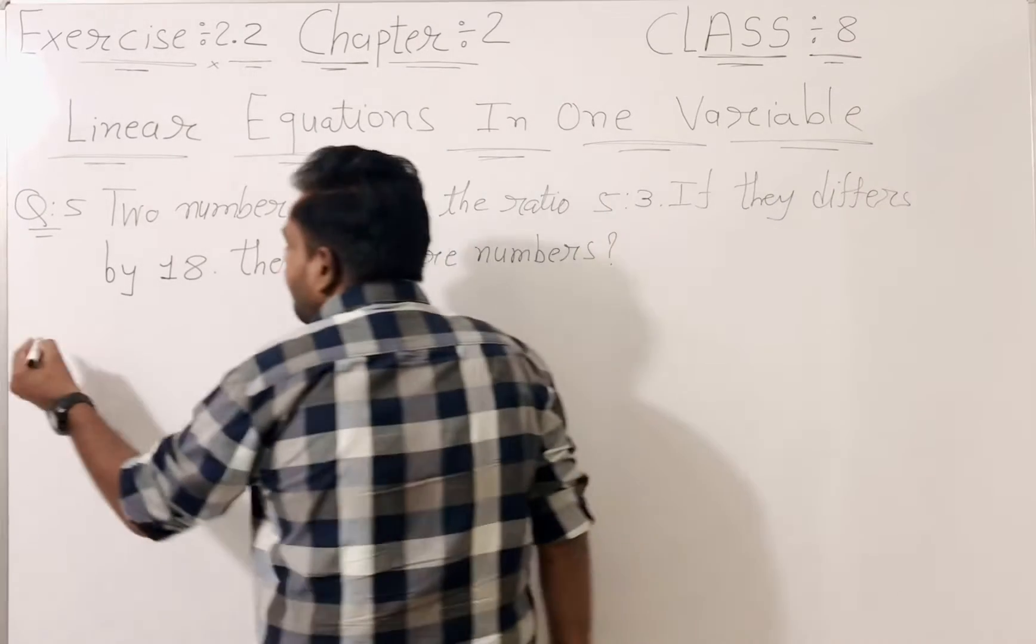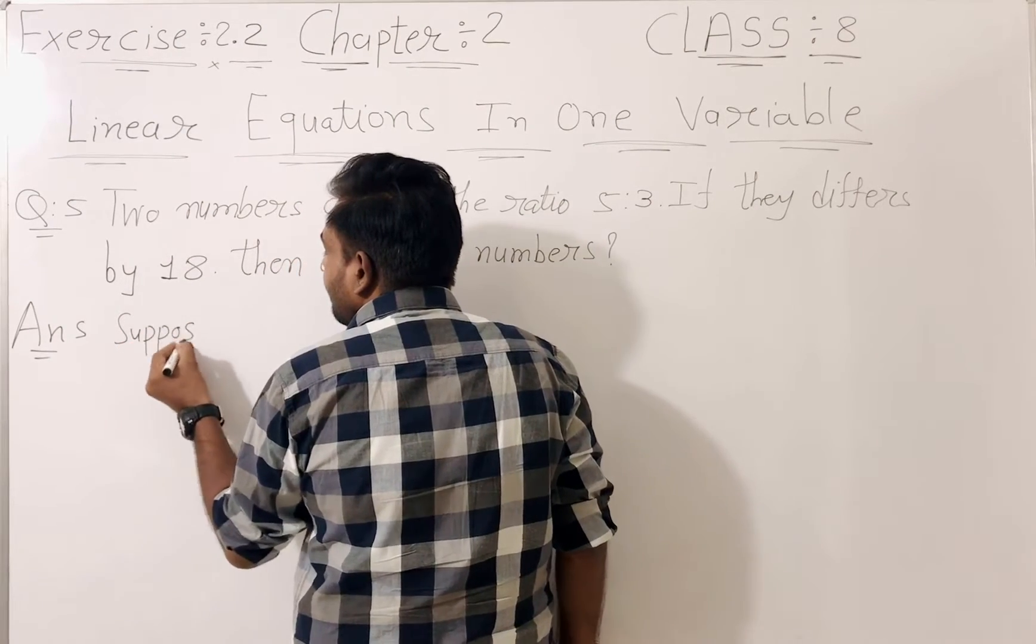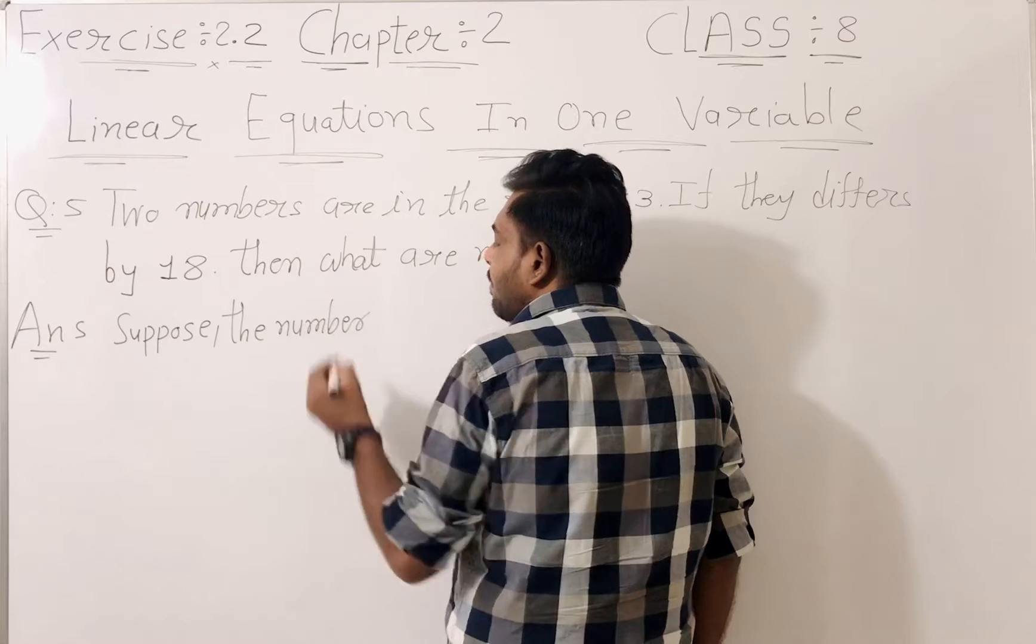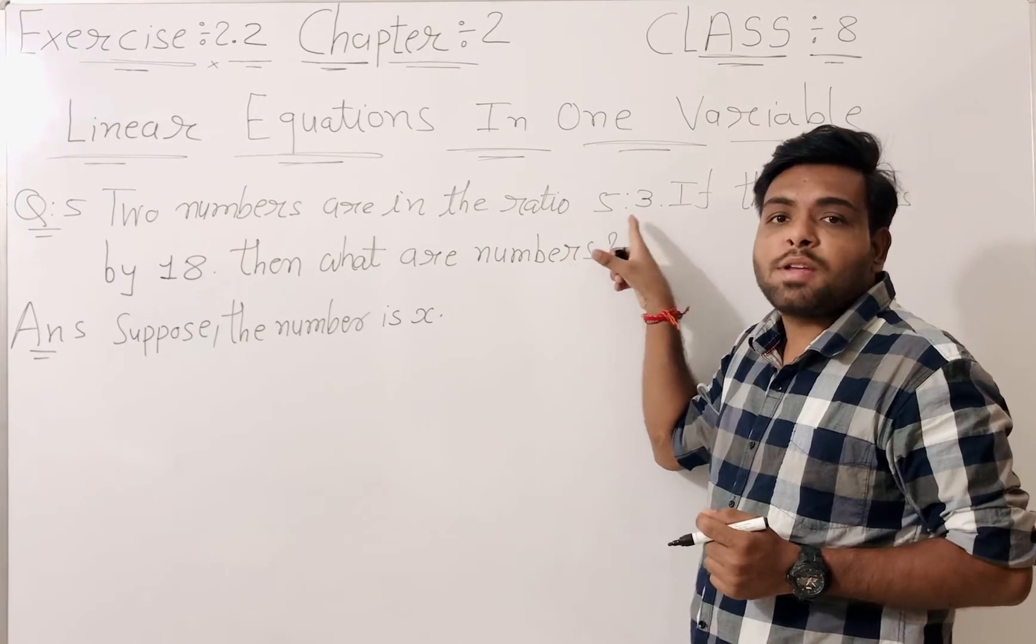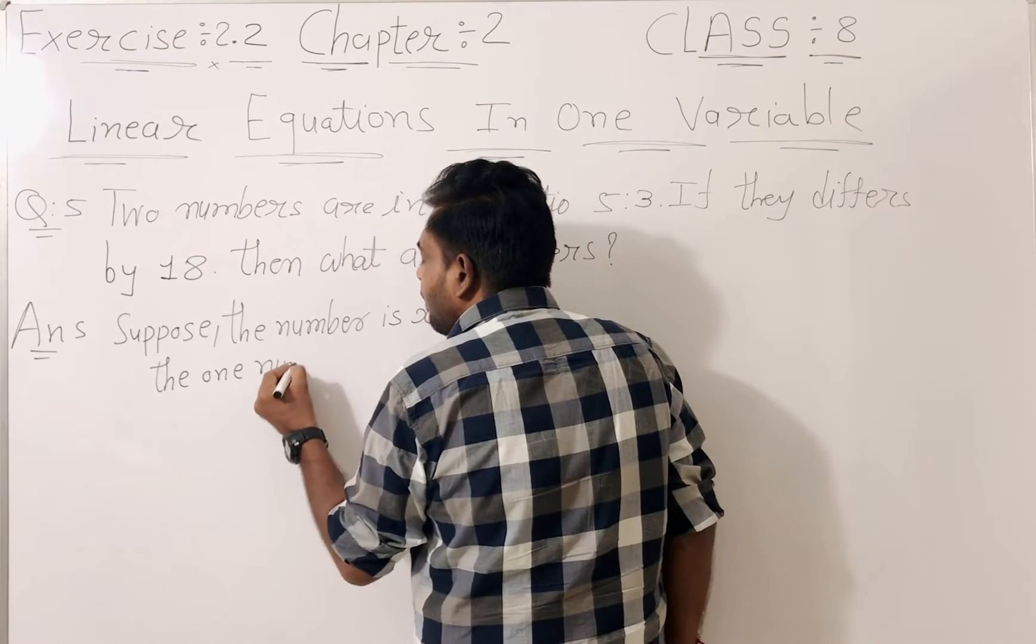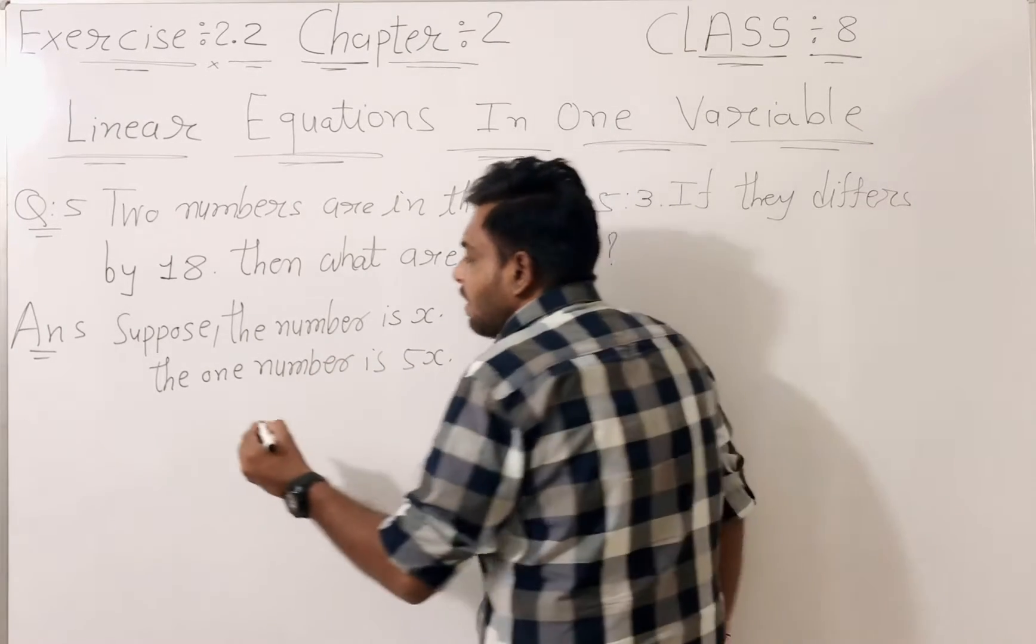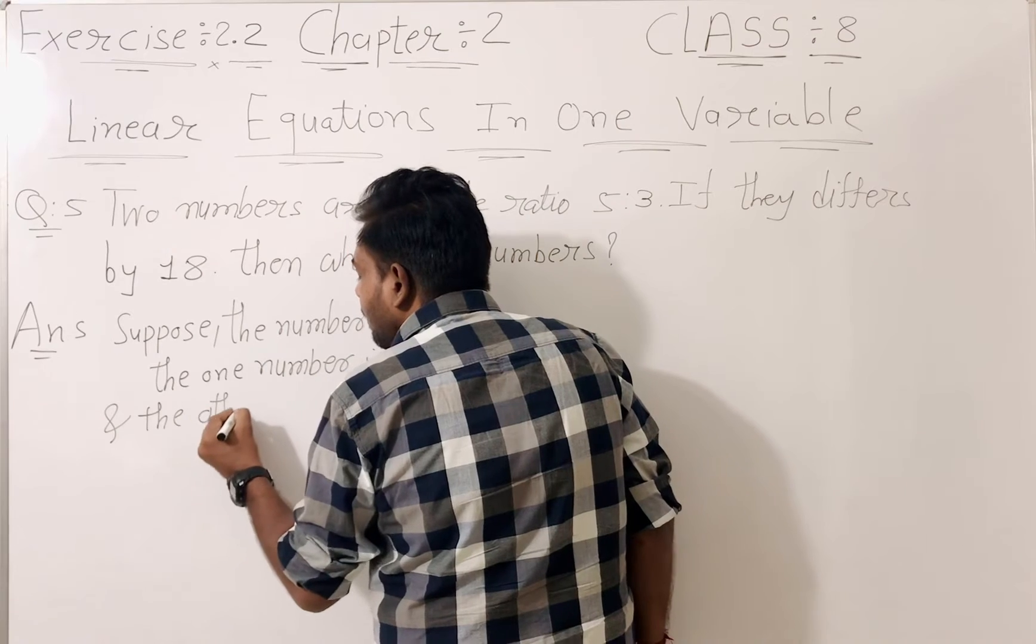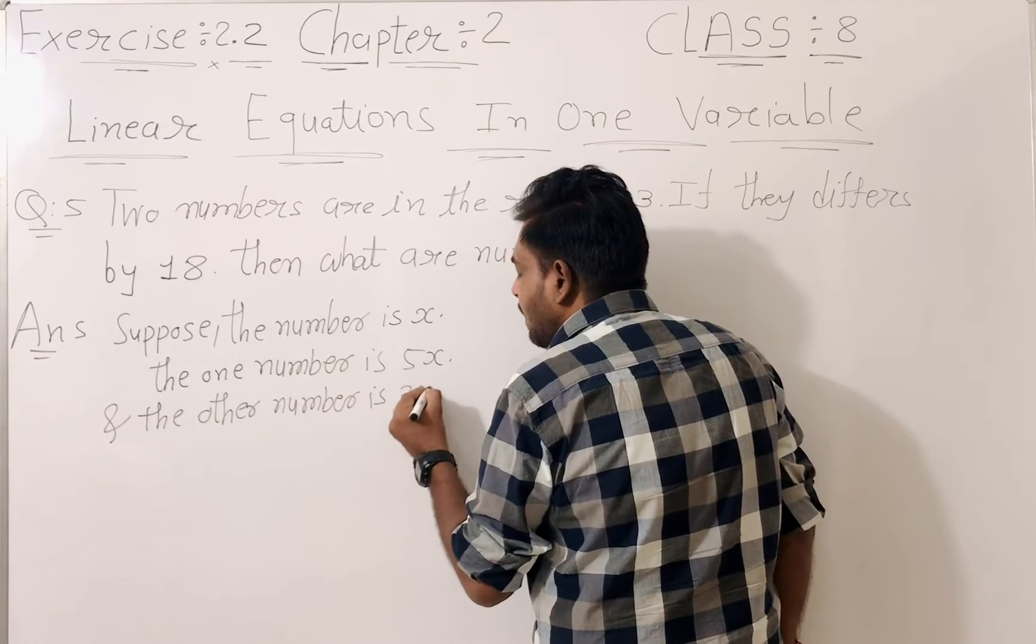First, here we write. Suppose the number is x. These two numbers are in the ratio 5 to 3. Then one number is 5 into x, and the other number is 3 into x.